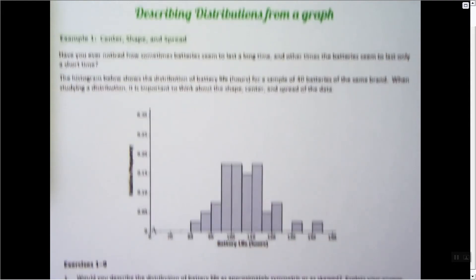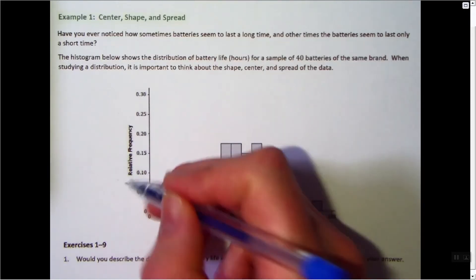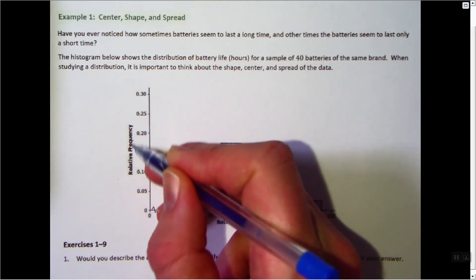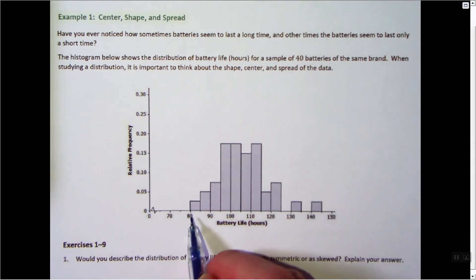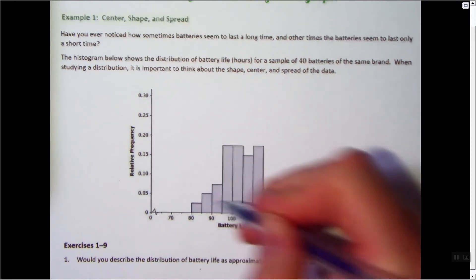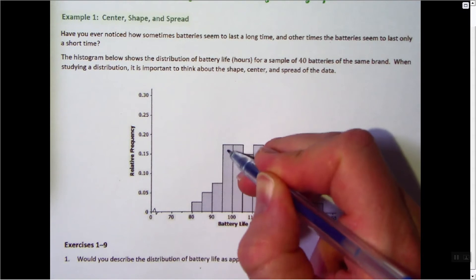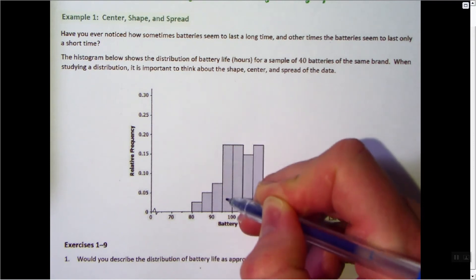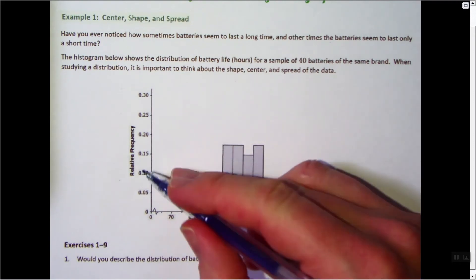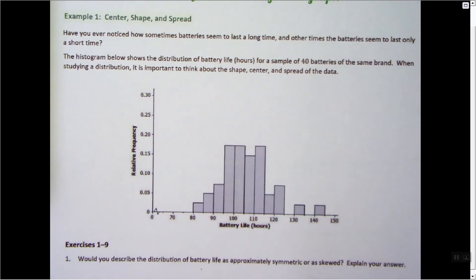So what this means is that the relative frequency or percentage of batteries in this sample of 40 batteries—maybe there's like 2.5% of them that lasted between 80 and 85 hours, maybe there's about 18% or so that lasted between 95 and 100 hours. Each of these bars represents a relative frequency or a percentage of the sample that fit into that category, or that bin width.